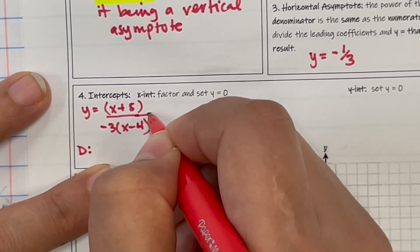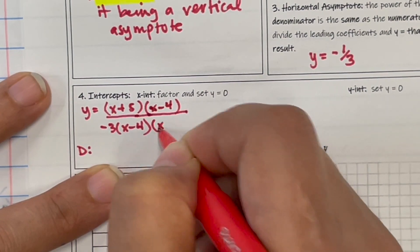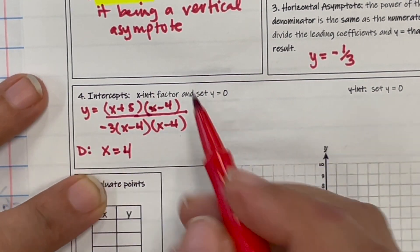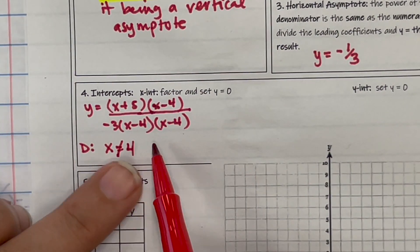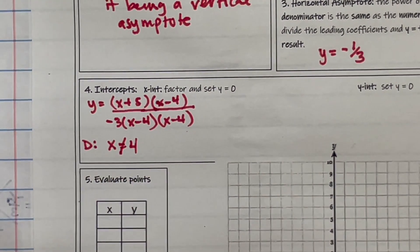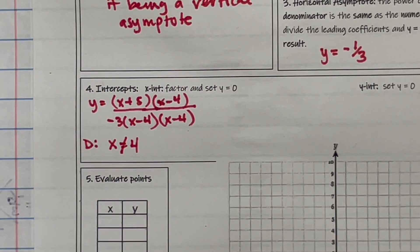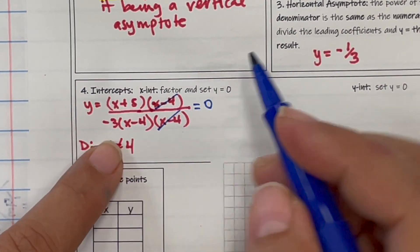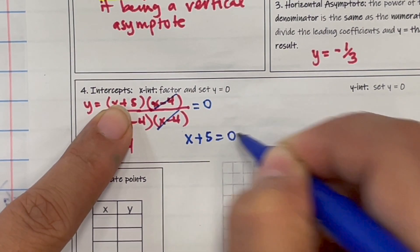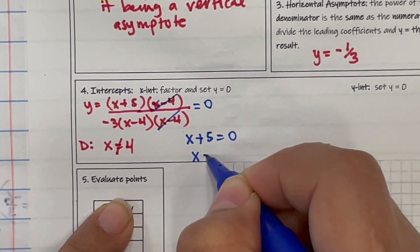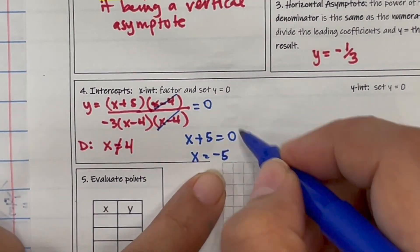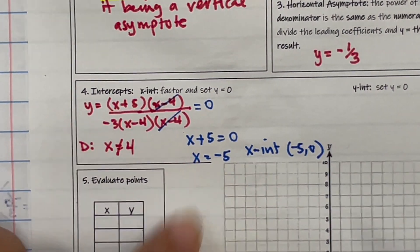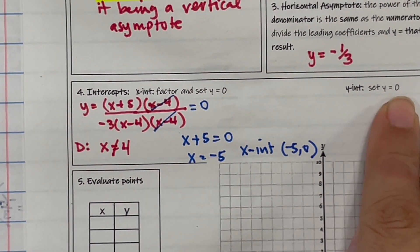Then I'm going to find my domain. So remember my domain cannot be equal to 0 on the bottom. So on the bottom I have x equals 4 because you're taking the negative 4 to the other side. x cannot equal 4 both times. So now I set the numerator equal to 0. So x plus 5 equals 0, take it to the other side, so x minus 5. And as long as that's not what I have in my domain, I'm good. So this is an x-intercept and in coordinate form, it happens at negative 5, 0.